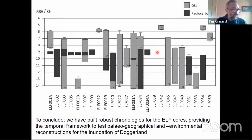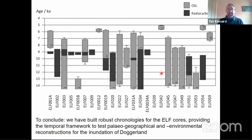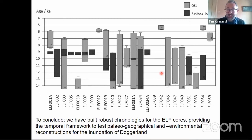So that's my 15 minutes up. To conclude: we have built a robust chronology for those 22 investigated cores, and this has provided the temporal framework on which to test the paleogeographical and environmental reconstructions.